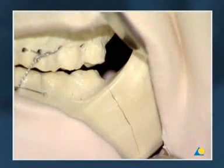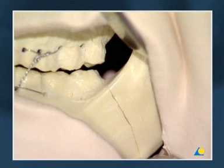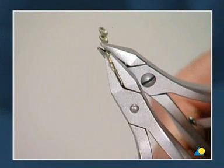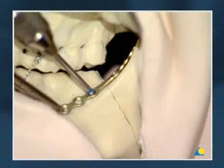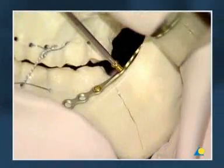Here are the main steps once again: reduction of the fracture and MMF with Ernst ligatures; adaptation of the 6-hole 2.0 mandible locking plate; adaptation of the plate and fixation of the plate to the oblique ridge.